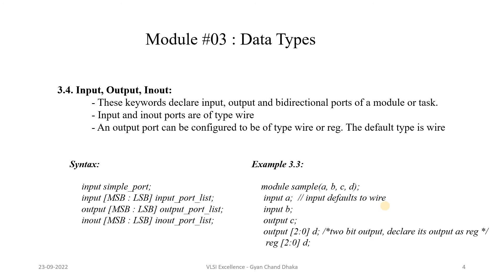Now let's look at the input, output, and inout keywords with respect to data types. These keywords declare the input, output, and bi-directional ports of a module or a task. An important point: input and inout ports are of type wire by default. The output port can be configured to be of type wire or a register, depending on the design.